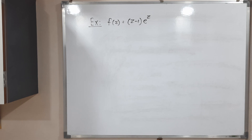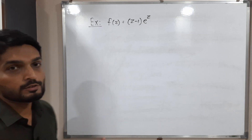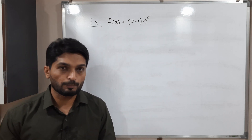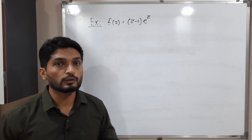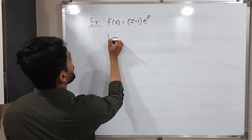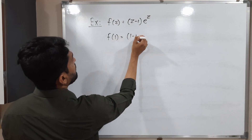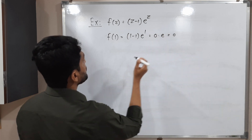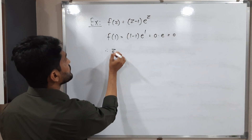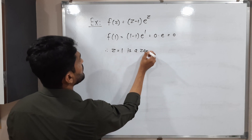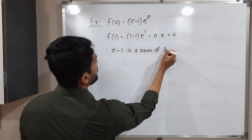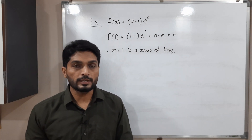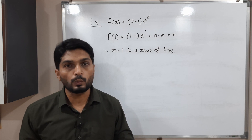In this example we will find the zero of the function as well as its order. What should I put so that the value of the function will be 0? Obviously, if I put z equal to 1, the value will be 0. f of 1: putting 1 here, 1 minus 1 will be 0, and 0 into e raised to 1 is 0. Therefore, z equal to 1 is a zero of f of z. Now we are interested in finding its order, so let us find its derivative and put z equal to 1 again.